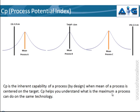CP is called the process potential index. As the name suggests, it refers to what a process can do — what is the potential, or the maximum performance, of a process on a given design. In layman's language, what is the 100% of your process on that design? Because when you change the design, the capability changes. Technically, CP is the capability of a process when the mean of the process is centered on the target.